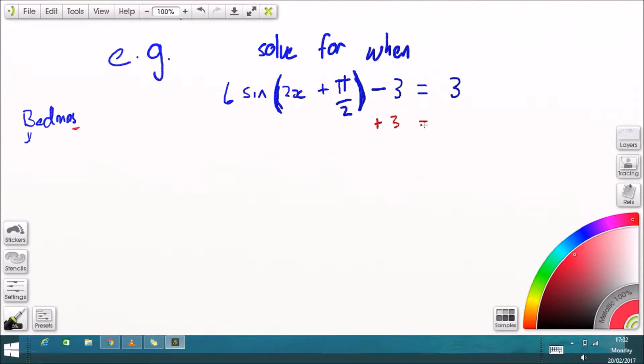So the first thing working backwards is subtraction. What's the opposite of the minus 3? Plus 3. So we add 3 to both sides. That leaves us with 6 times sine of everything inside the brackets equals 6.